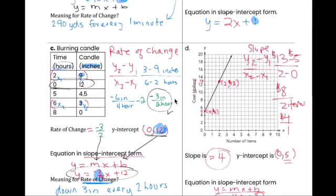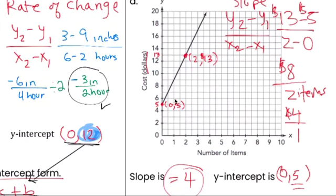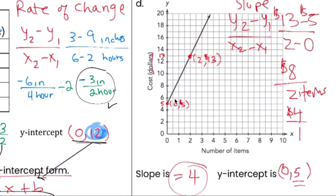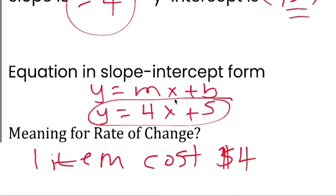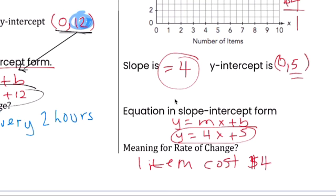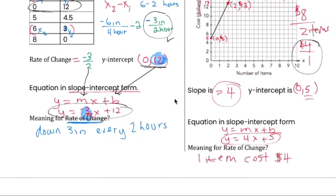So this is your answer right there for b. That's how you do d. Slope, y-intercept (0,5), slope-intercept form, and the meaning is one item costs four dollars, or four dollars for every one item, means the same thing.